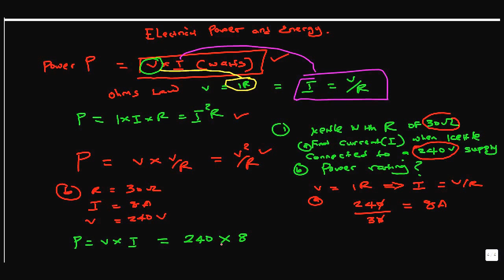24 times 8 gives us 192, so that's 1920 watts.